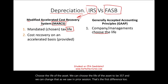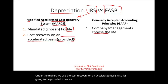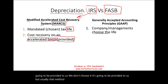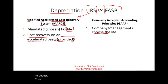Second, under MACRS, we use cost recovery on an accelerated basis. It's going to be provided to us — we don't choose it — but usually that method is accelerated. Accelerated means fast. The reason for the IRS is to recover your cost so you can get a tax deduction, buy more stuff, and keep the economy going.